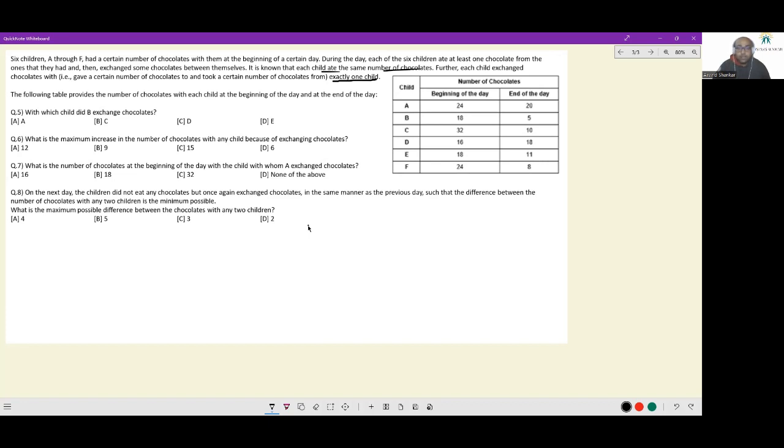First thing we'll have to figure out is how many chocolates did the children eat. First, add up all the number of chocolates at the beginning of the day. 24 and 18 is 42, 42 and 32 is 74, 74 and 16 is 90, 90 plus 18 is 108, 108 plus 24 is 132. There are 132 chocolates at the beginning of the day.